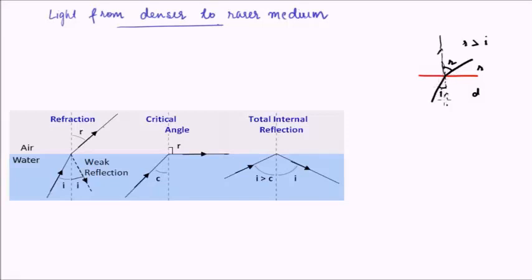What will keep on happening is that the angle of incidence keeps increasing, and the angle of refraction increases at a faster rate. Till a certain moment, we have a ray of light incident at an angle i and the ray of light is refracted away at an angle r which is more than i.